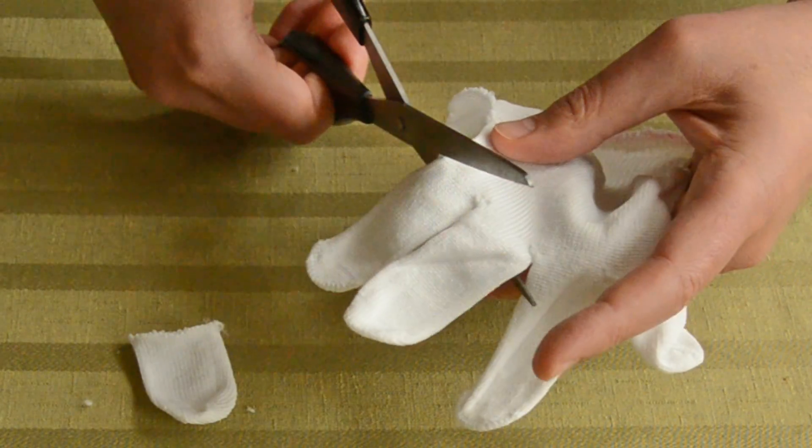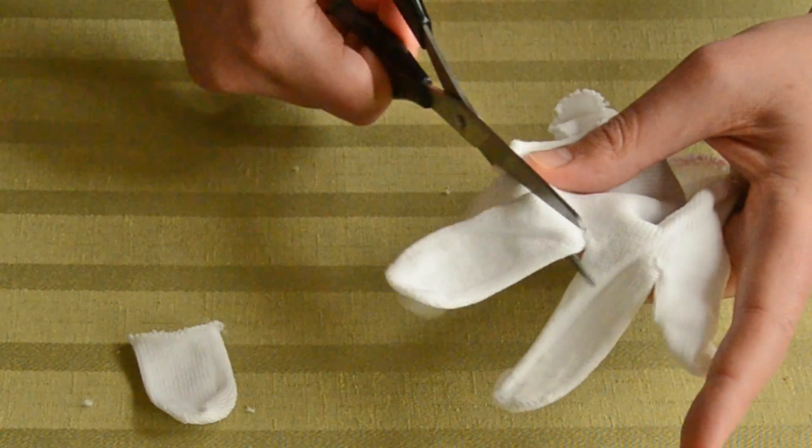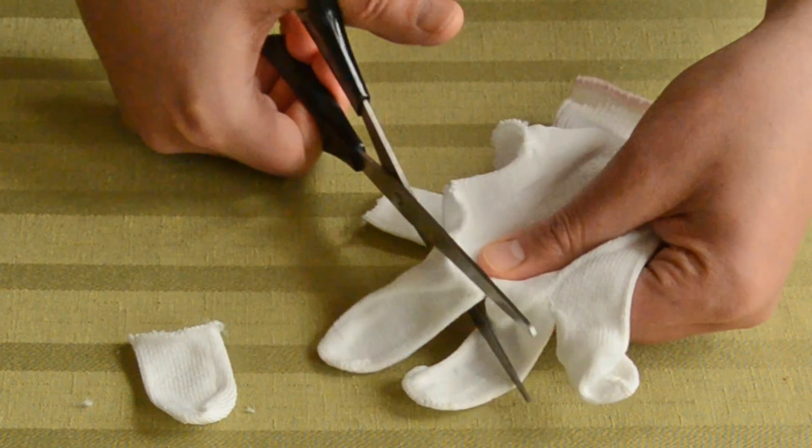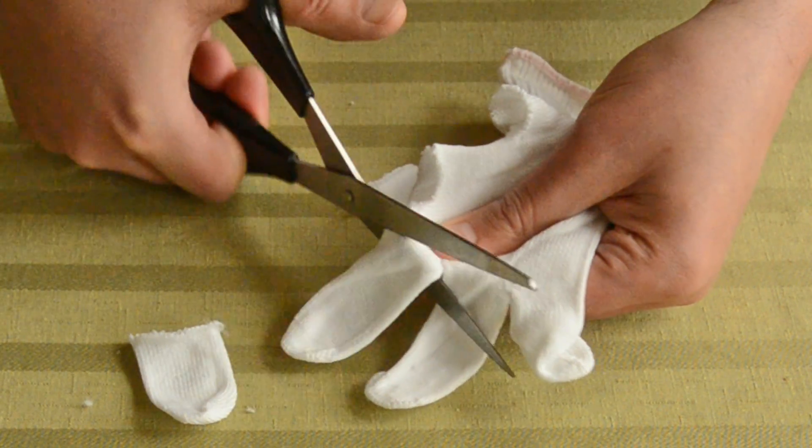Now if I cut off the thumb and the top two fingers, I have my fingers free to use the stylus or touch with my fingers if I need to.